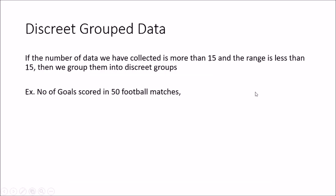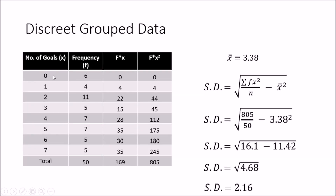Now we'll see how to calculate the standard deviation for a discrete grouped data set — number of goals scored in 50 football matches. I put them into a table: zero goals in six matches, one goal in four matches, and so on. The standard deviation equation is slightly different here. In the previous case, the frequency was always one, but now I have multiple occurrences of each value, so I need to account for that frequency.